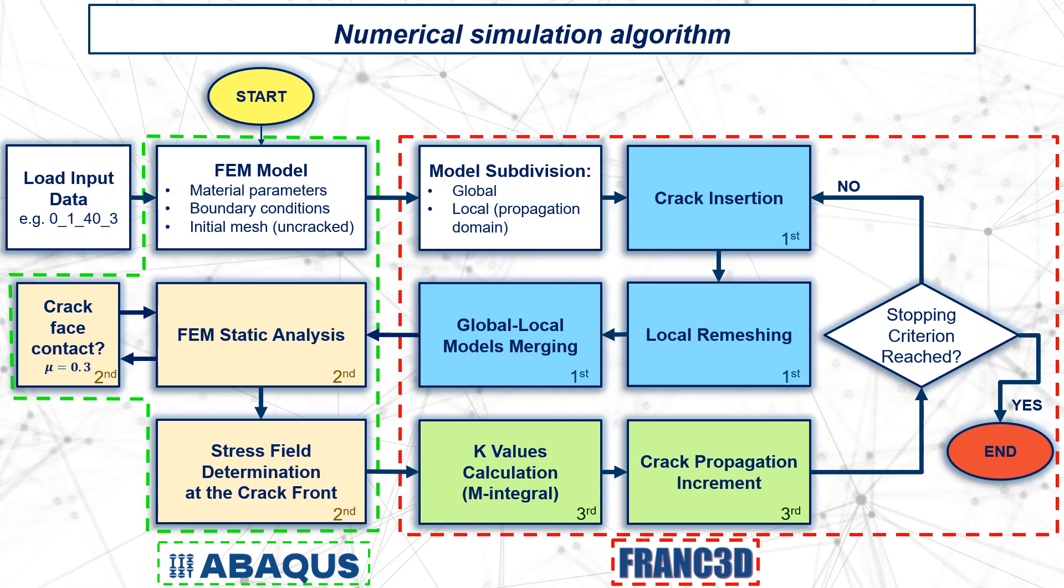Each simulation step consists of three phases. During the preprocessor phase, the new crack is geometrically inserted into the domain that is remeshed with quadratic tetrahedral elements. Then the local and the outer global mesh are merged. The second phase is the finite element calculation during which stresses and displacements are calculated for all nodes. In this phase, a non-linear contact between the crack faces useful during the compressive part of the cycle is modeled with a friction coefficient equal to 0.3. The post-processor phase aims to determine the stress intensity factors for each crack-front node. Such nodes are then displaced along the corresponding propagation direction in order to define the new crack front.